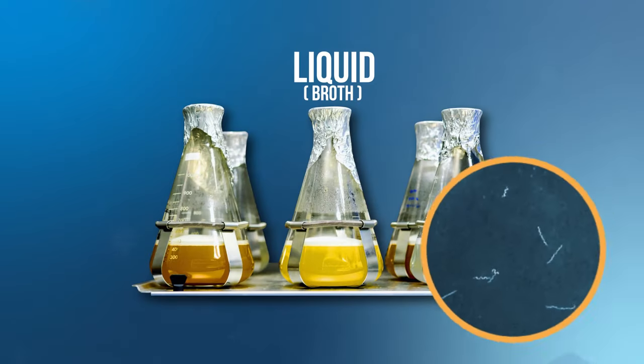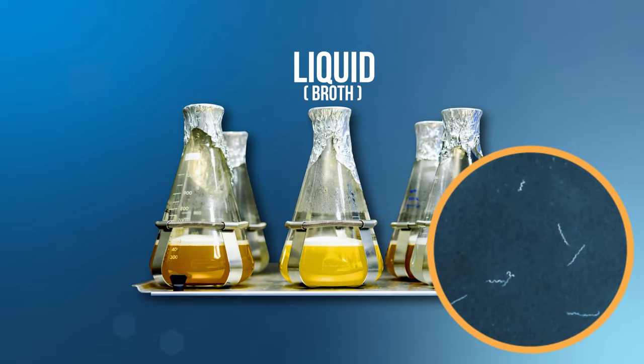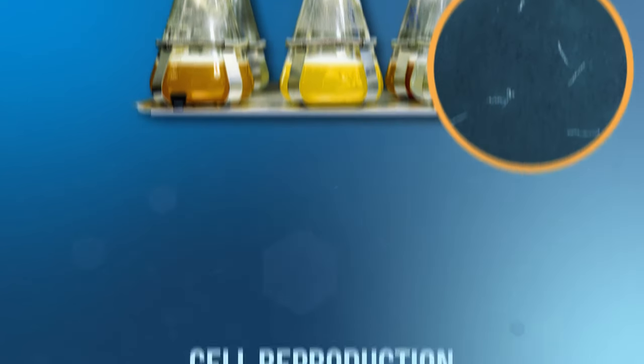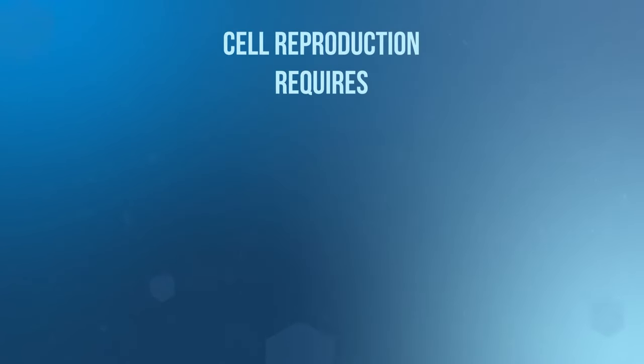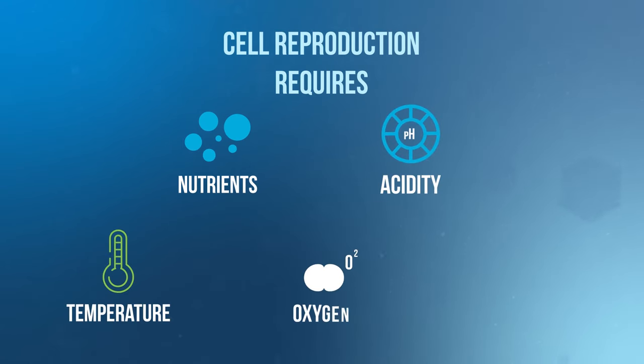Bacterial cells that replicate in liquid culture will float, giving the culture a cloudy or turbid appearance. For cell reproduction to occur, cells need to have the right nutrients, acidity, temperature, oxygen, and moisture.